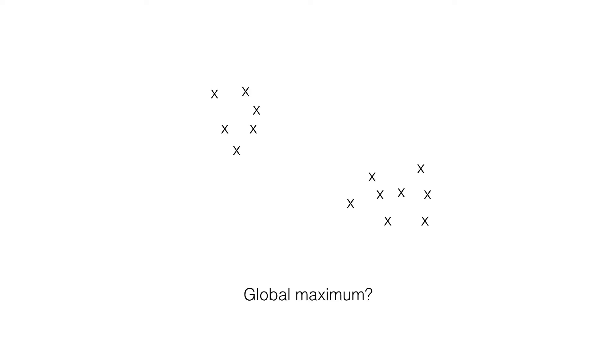So consider you have some data points like this. And when you think about what do you imagine to be the right Gaussian mixture model to generate this data? You would probably imagine something that looks like this, right? There's a Gaussian on the top left and the Gaussian on the bottom right.